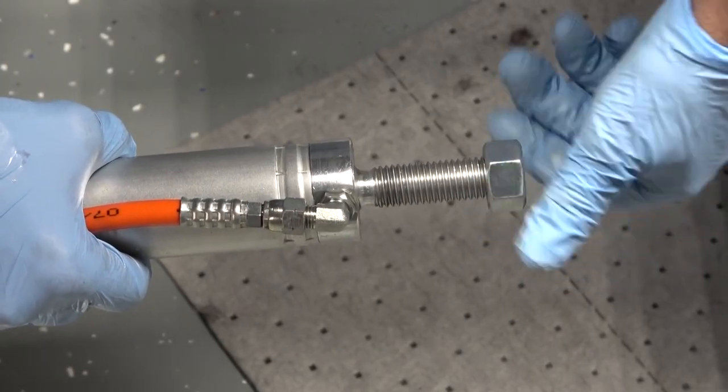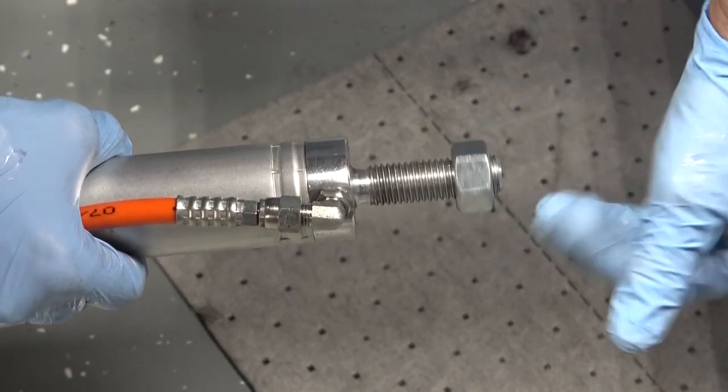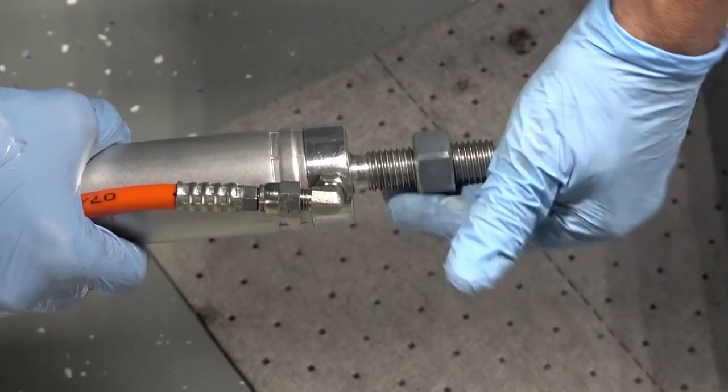Before installing the new cylinder, remove the nut from the rear of the old cylinder and thread it into place on the rear of the new one.